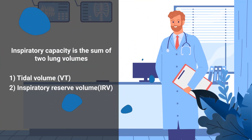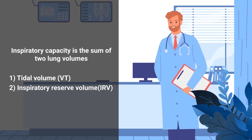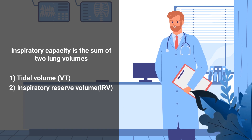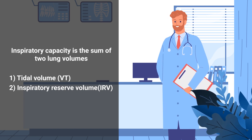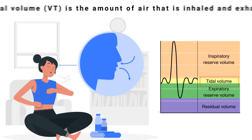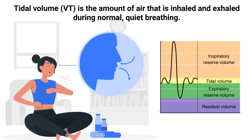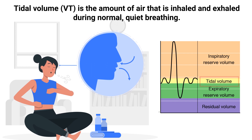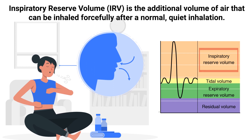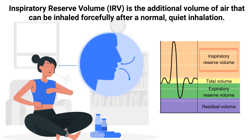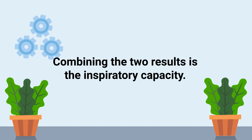Inspiratory capacity is the sum of two lung volumes: the tidal volume and inspiratory reserve volume. Tidal volume is the amount of air that is inhaled and exhaled during normal quiet breathing. Inspiratory reserve volume is the additional volume of air that can be inhaled forcefully after a normal quiet inhalation. Combining the two results gives the inspiratory capacity.